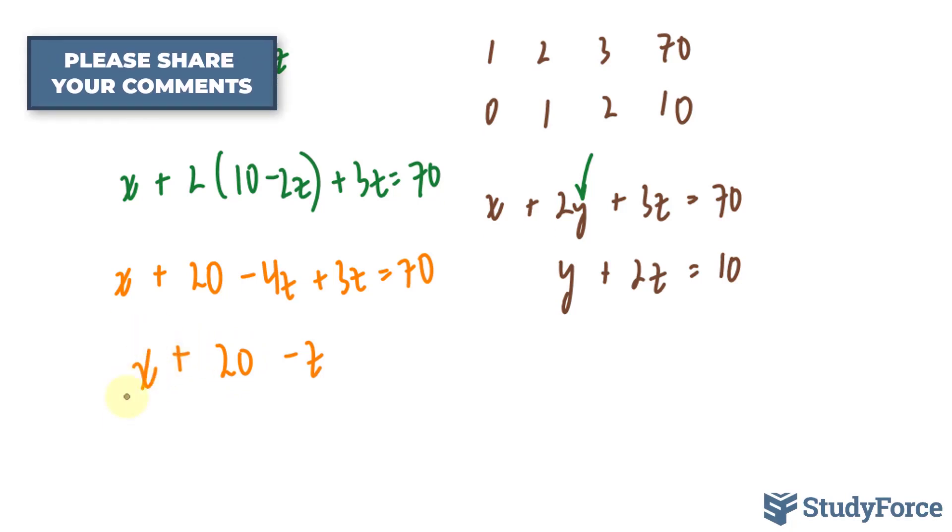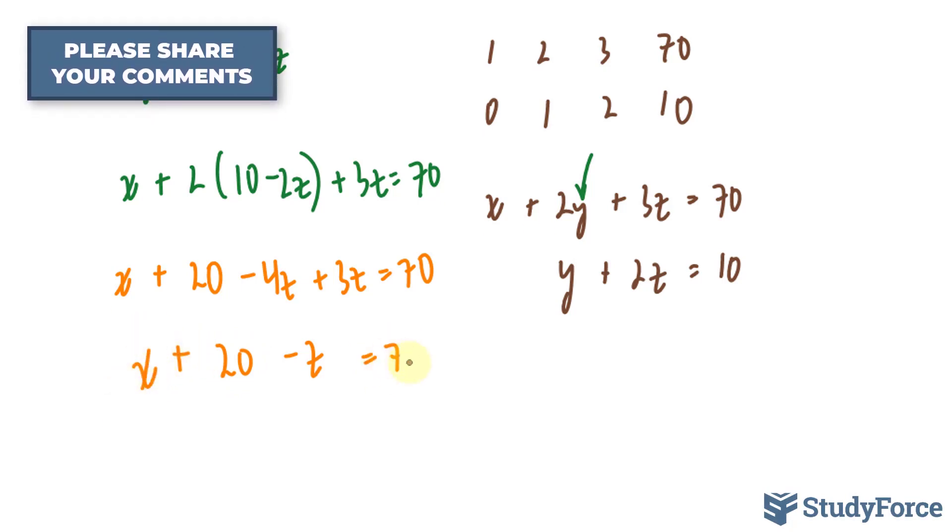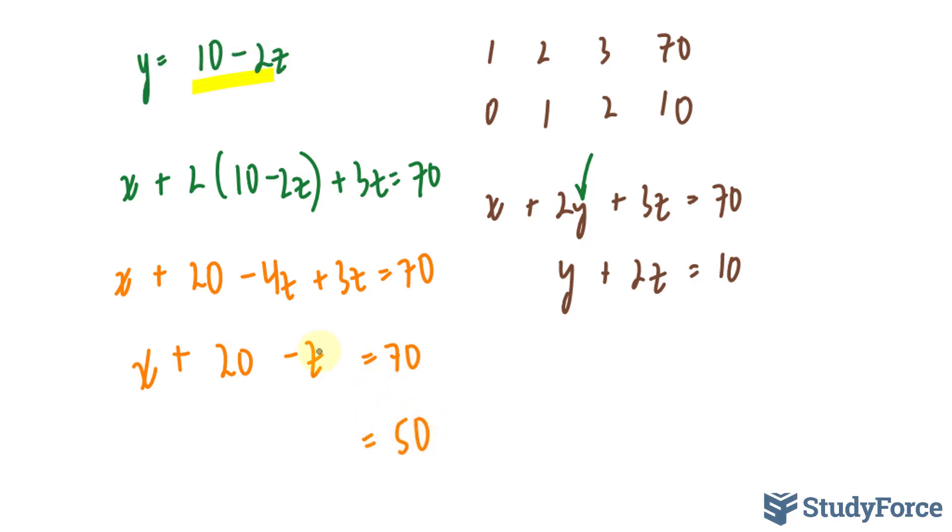And all I'm doing here is solving for x. So to do that, I'll take this twenty over, that makes that fifty. And I'll take this z over, that makes it plus z.